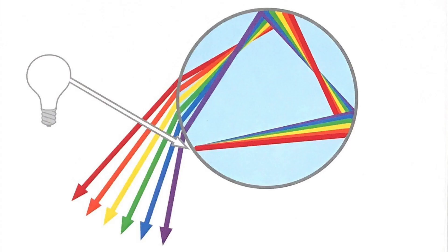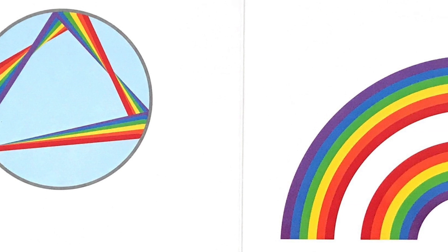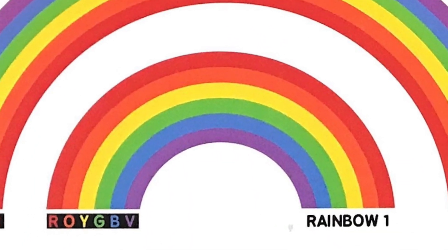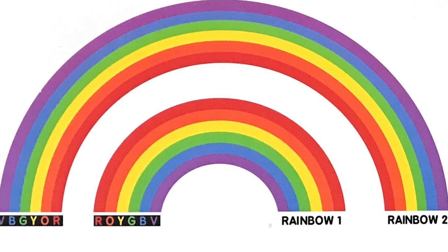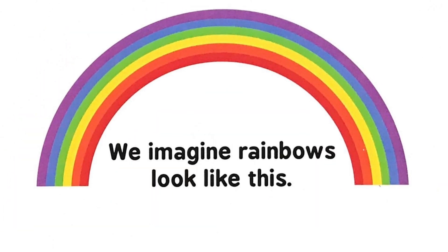Sometimes light is reflected two times inside the raindrop. This makes a second rainbow. The color order on the second rainbow is reversed. We imagine rainbows look like this.